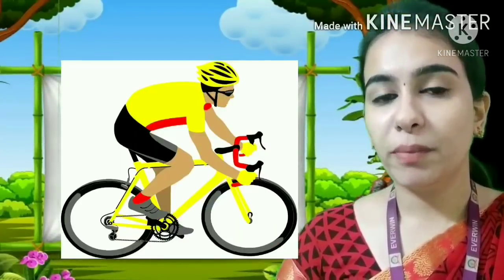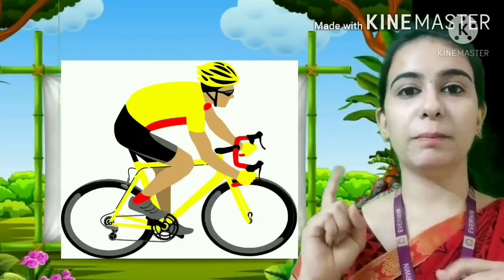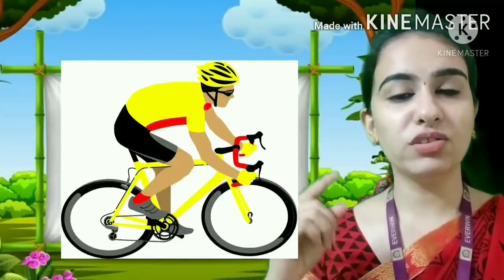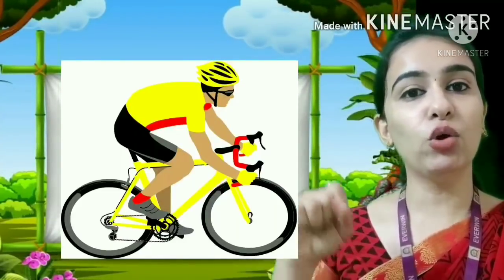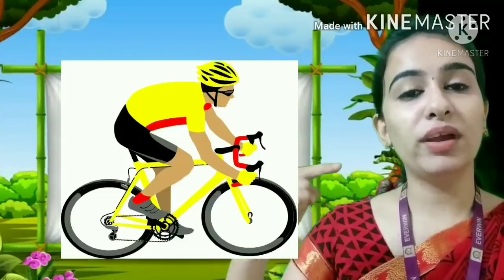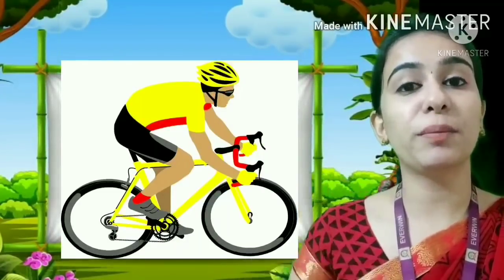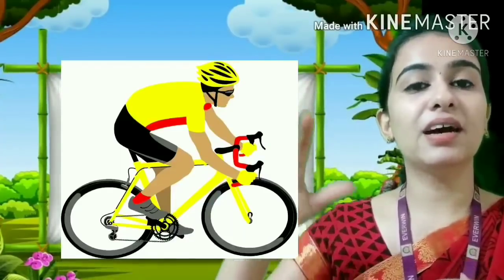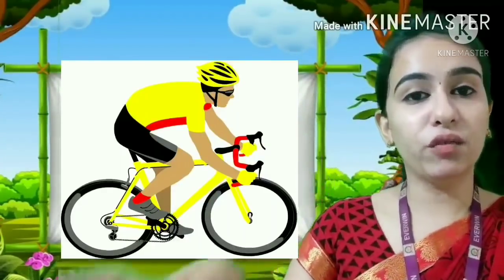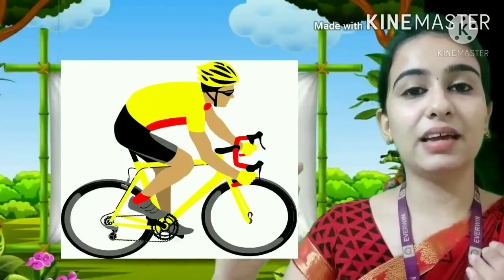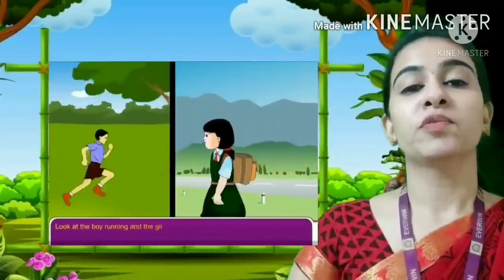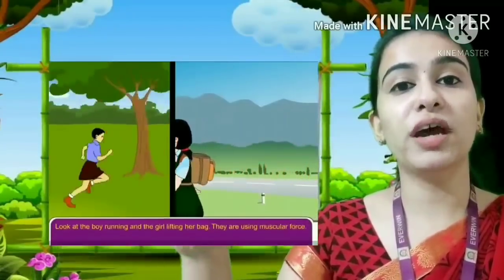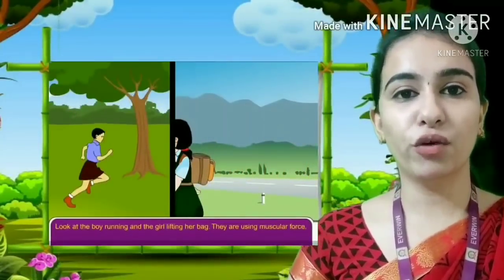An example of muscular force is riding a bicycle. Will the bicycle move without applying force? No. You have to sit on the cycle and pedal the wheel. When you pedal, you apply muscle strength from your legs to the wheel. By applying muscular force, you pedal the cycle and make it move. So muscular force means using all your muscle strength to make an object move.